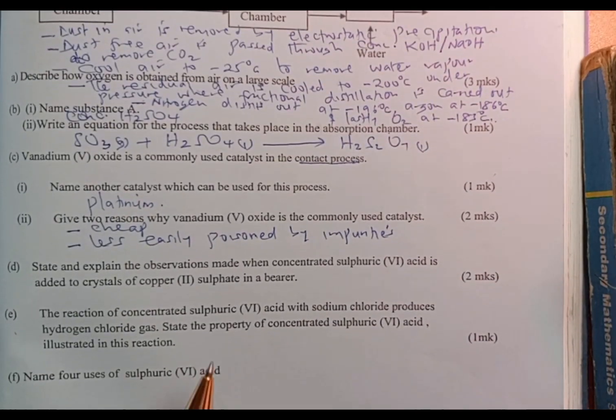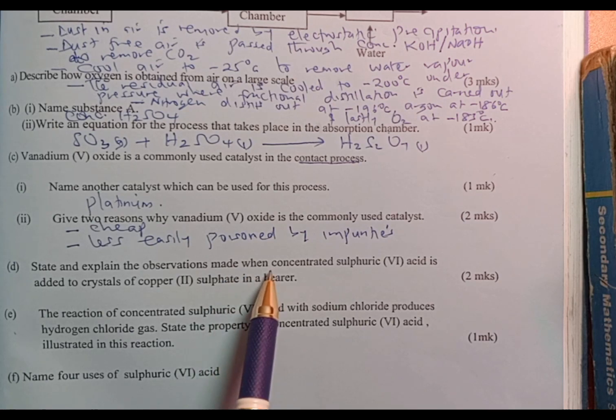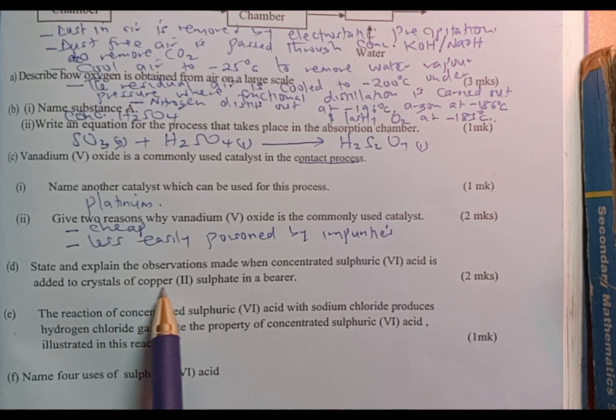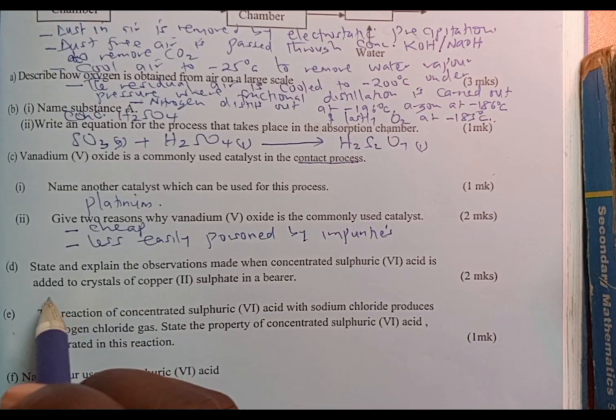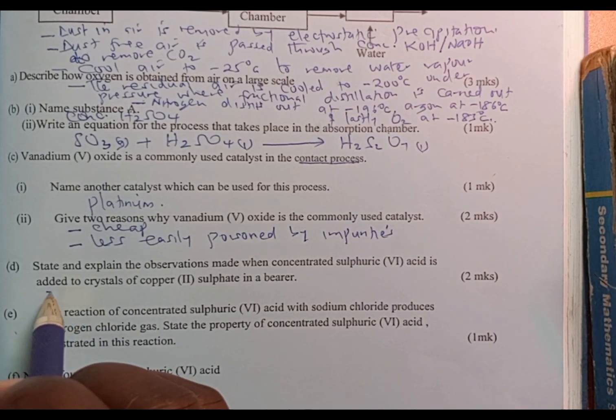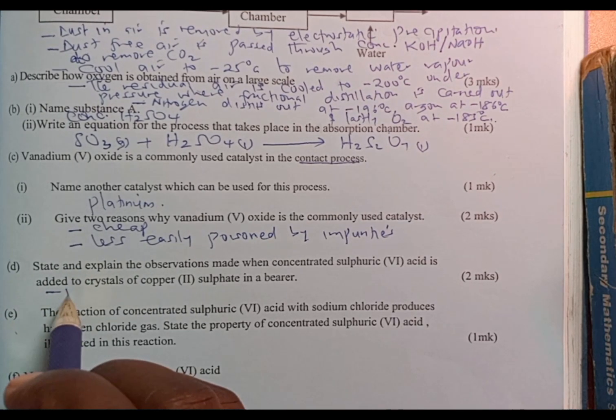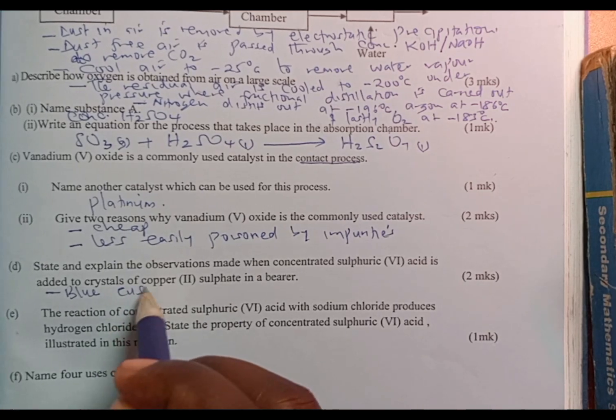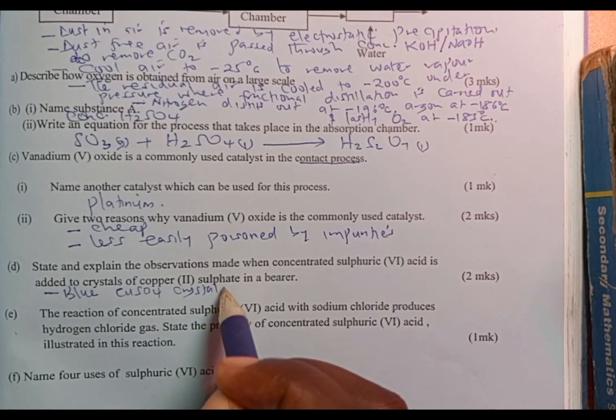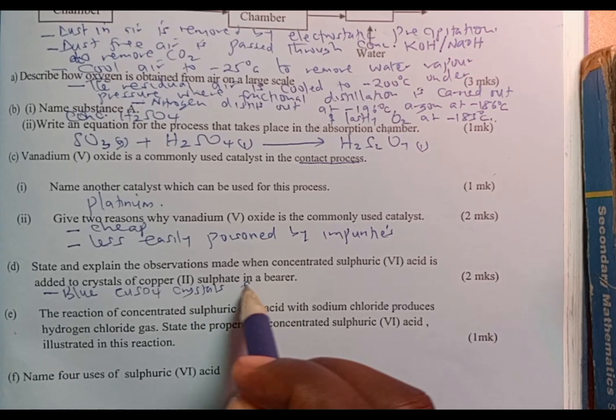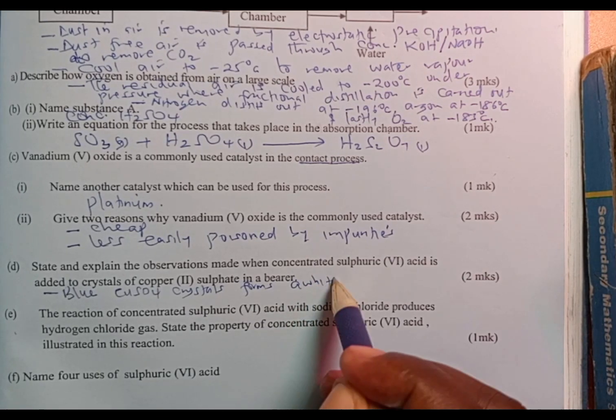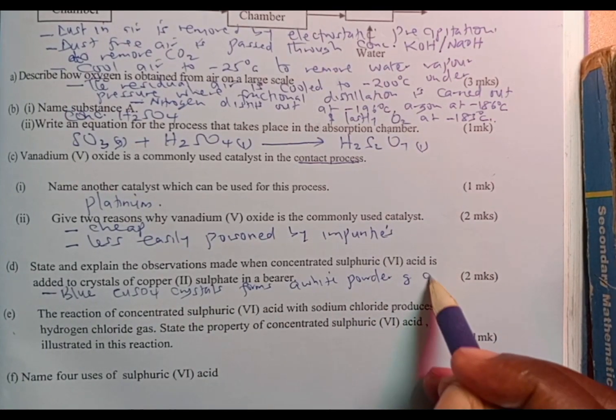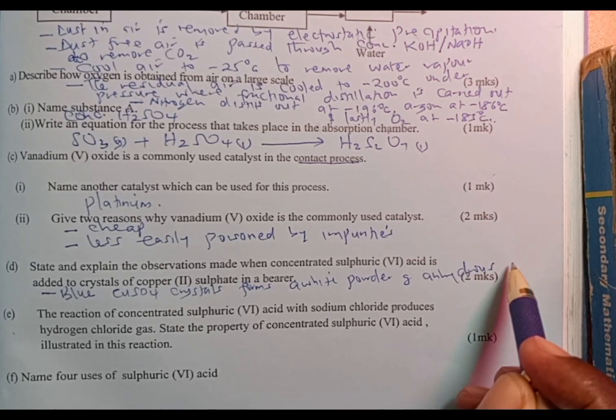The next question: state and explain the observations that are made when concentrated sulfuric acid is added to copper II sulfate in a beaker. Copper II sulfate crystals contain water of crystallization. So one of the observations you expect is that blue copper II sulfate crystals form a white solid or white powder of anhydrous copper II sulfate.